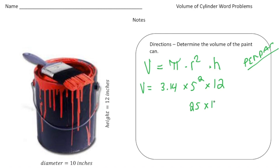So it's 25 times 12 times pi, and it's totally fine to use a calculator for this. So I do 3.14 times 25 times 12. I get a volume of 942. That's going to be cubic inches of paint.